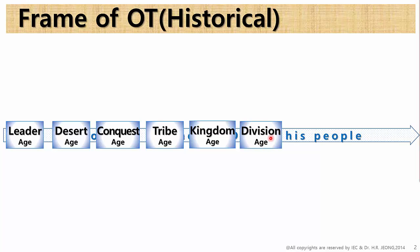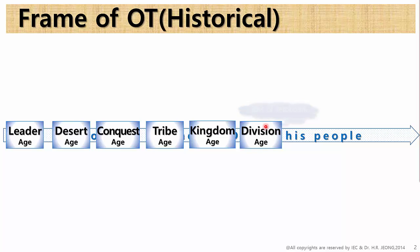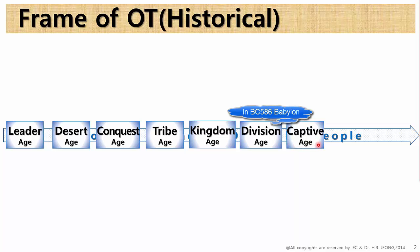When all the kings of Israel committed idolatry incurred by Jeroboam, the first king of Israel, God abandoned Israel using Assyria in BC 722. Then, in BC 586, God also disowned Judah for its sins, and this time Babylon was used. The survivors from Judah were brought to Babylon as captives. This is called the captive age.